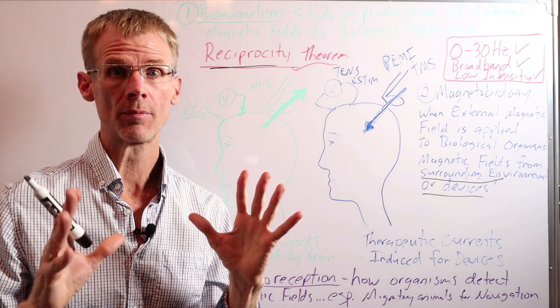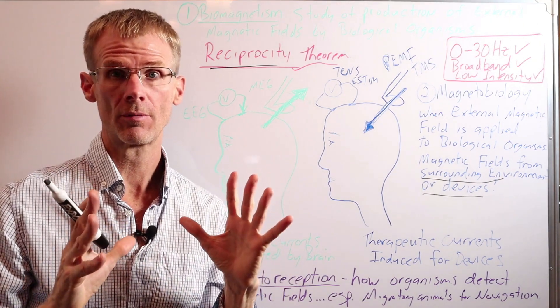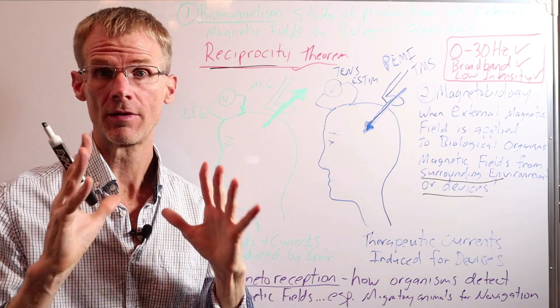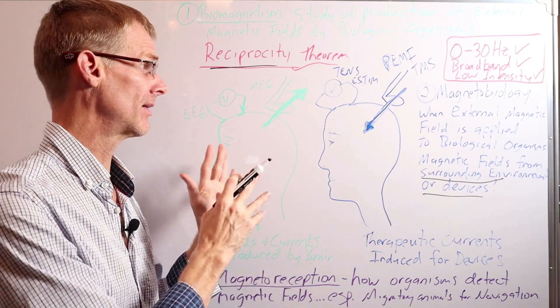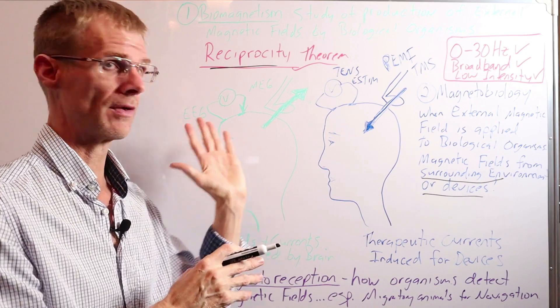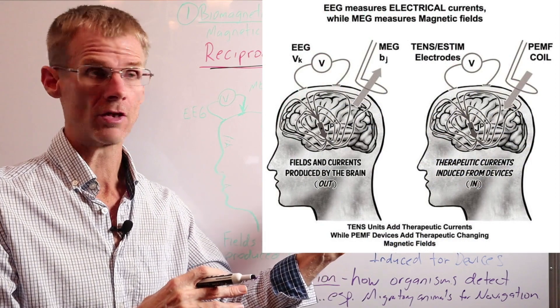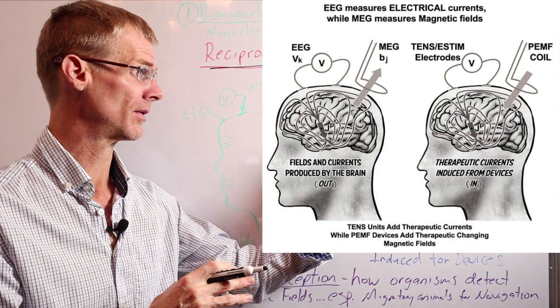So to illustrate the principle of biomagnetism and magnetobiology and how they're reciprocals and how the reciprocity theorem applies, let's just take a couple simple examples. Well, they're not so simple, but I'm going to try to simplify them. So these two images here represent biomagnetism and magnetobiology.